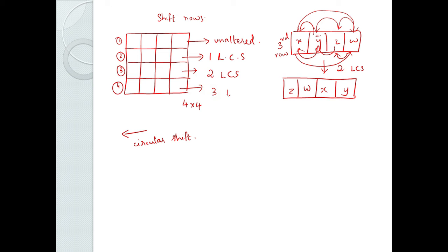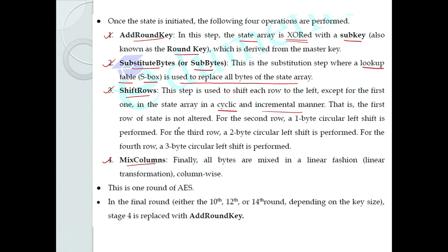The fourth row is a 3-byte left circular shift. The final operation is Mix Columns, which is a column-wise linear transformation. We perform operations on each column — combining and exchanging values — as a linear transformation.